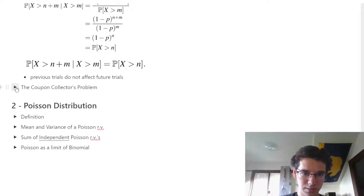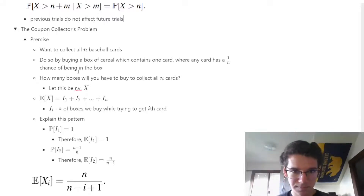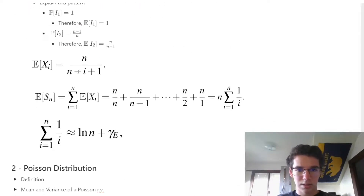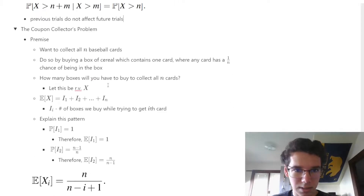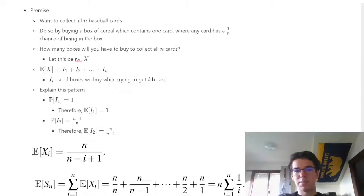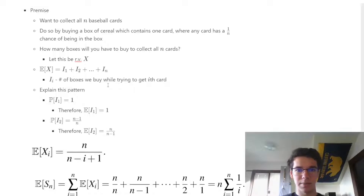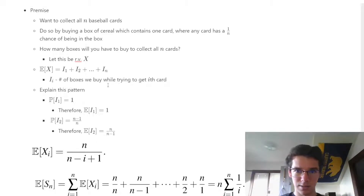Now we look at something called the coupon collector's problem. The idea is that we want to collect all n baseball cards by buying boxes of cereal, where each box contains one card, and any of the n cards has a 1/n chance of being in that box. How many boxes will you have to buy to collect all n cards?